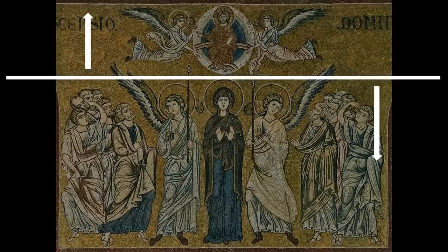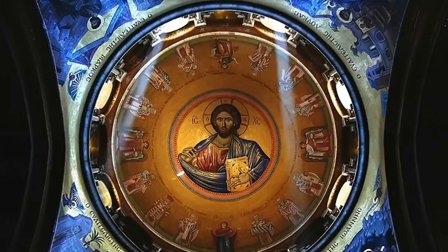We have Christ ascending as the head of the church, and then under that we have the church itself, represented first of all as the mother of God in the center, and then the apostles on the side. You have these two tiers: the head and the body. The ascension image could almost be the return of Christ, because that's also how Christ returns. He's going to come back and manifest the unity of the head and the body — the total unity of the head and the body.